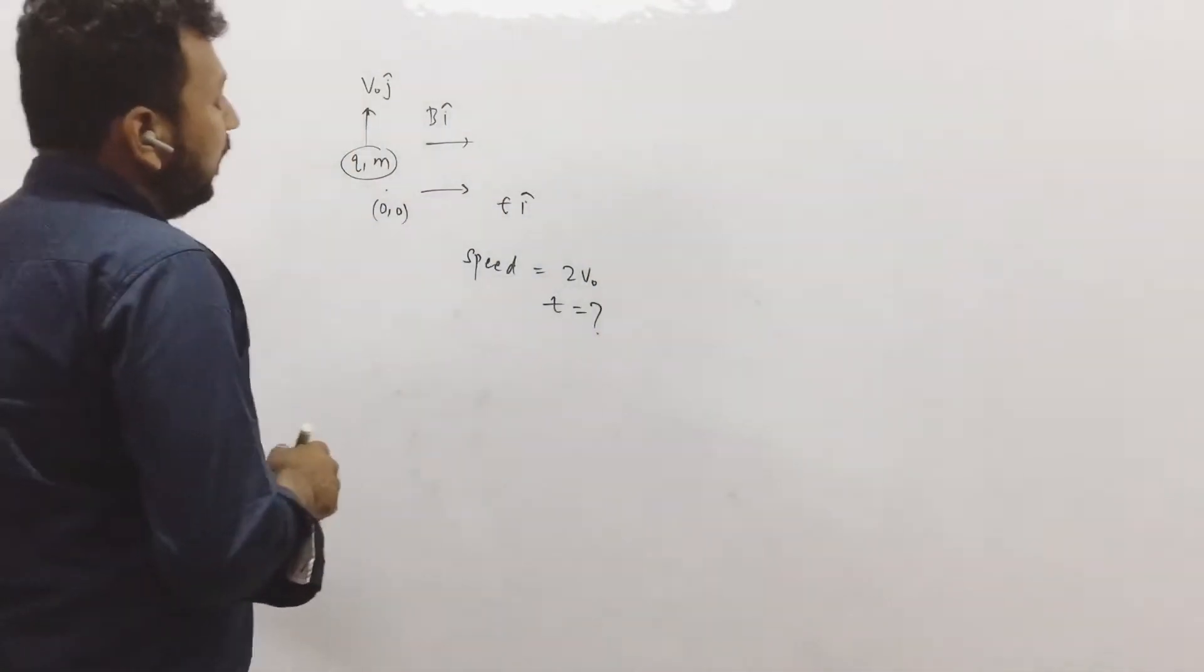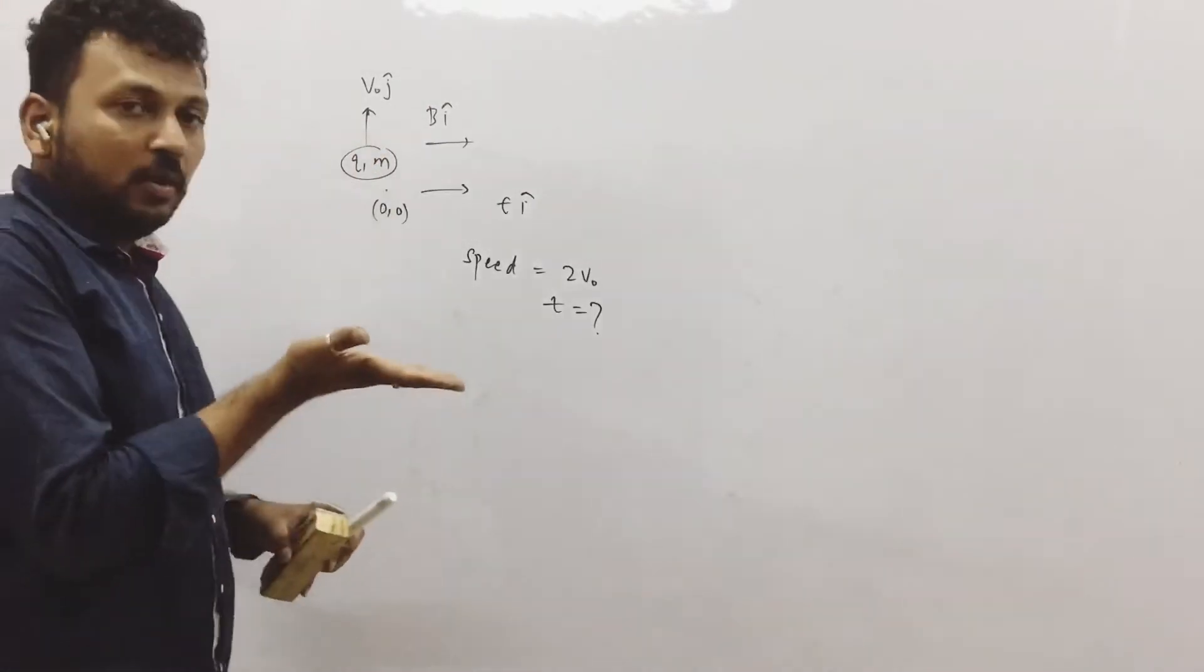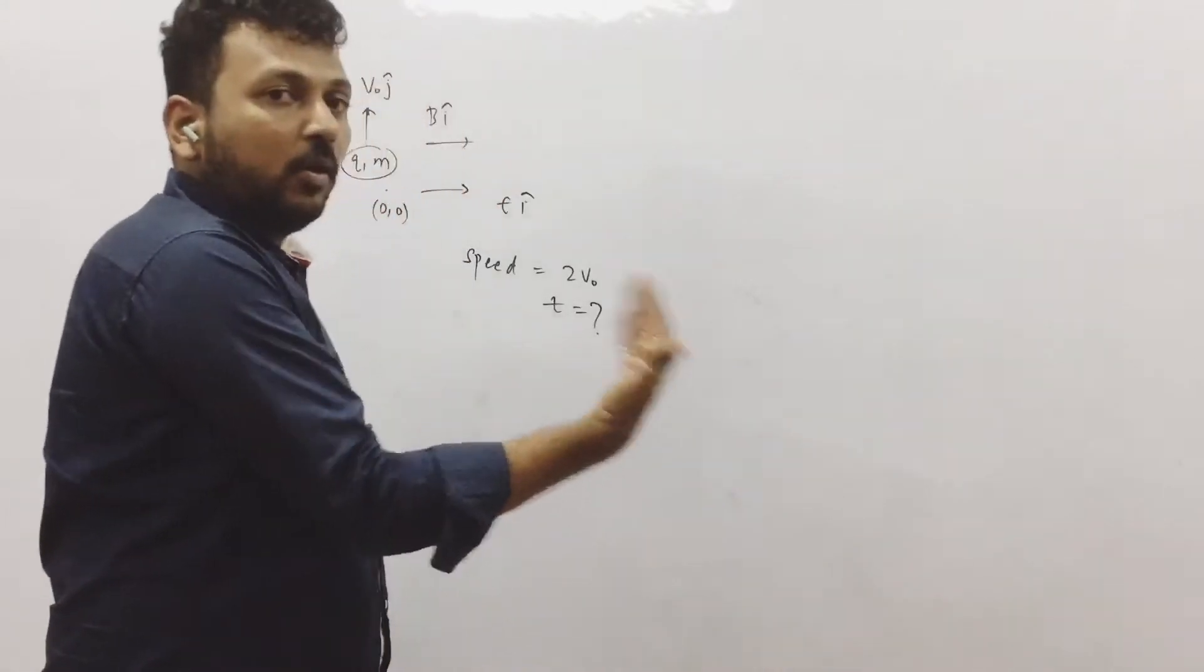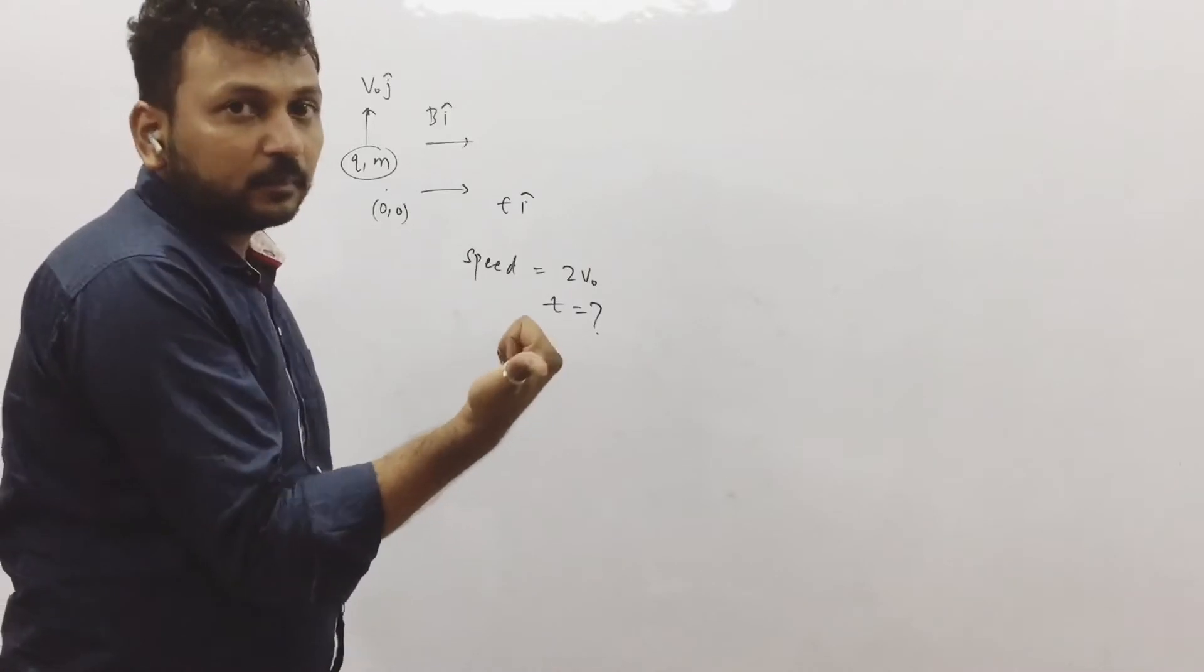Second thing we need to see, let's see B and v, what they will do. So q v cross B is the force, right? We know that. So v cross B, the force will be like this.